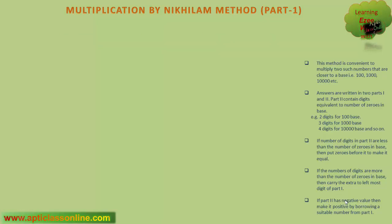In this very first class, I have taken the multiplication of such numbers which are closer to base 100 and less than 100. Now, let's start with the first example, that is 92 multiplied by 98.